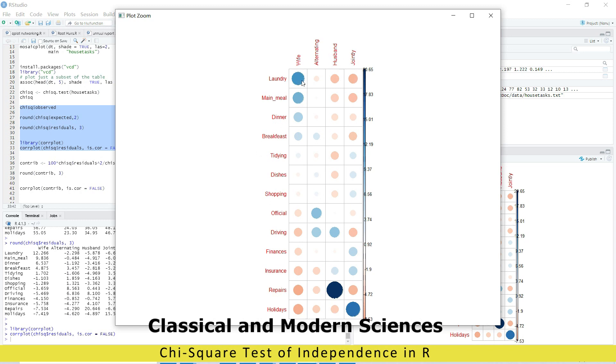You can see wife is positive correlated in laundry work, and husband is positive correlation in repair of house holding things, and both they work together during holidays.